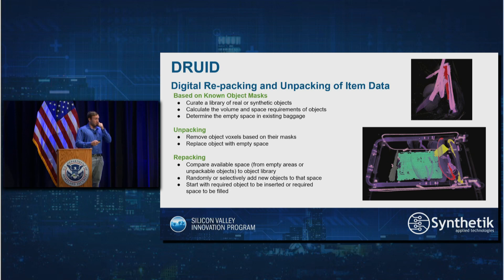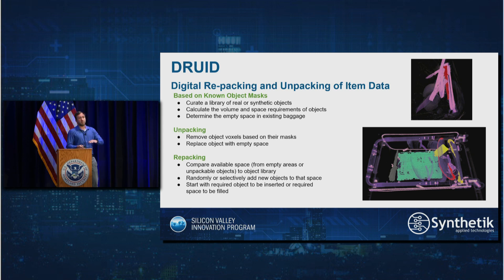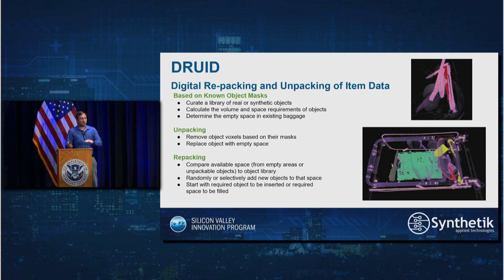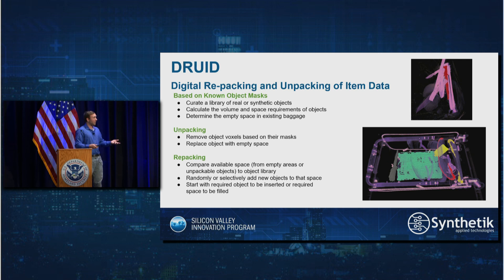The last thing, something I'm really excited about, we call it Druid — digital repacking and unpacking of item data. Because of the process we go through when we find all of these voxel masks of all these objects, we now have intimate knowledge about which parts of a bag are represented by objects and which parts are empty space. This allows us to take the object library of every object we've found, remove those from bags, and insert new objects into the empty space. This is super important for training ATR algorithms — instead of scanning hundreds of thousands of bags, you can take your existing scan data set, remove and replace objects, even the same objects in different orientations, to exponentially increase the amount of training data available.